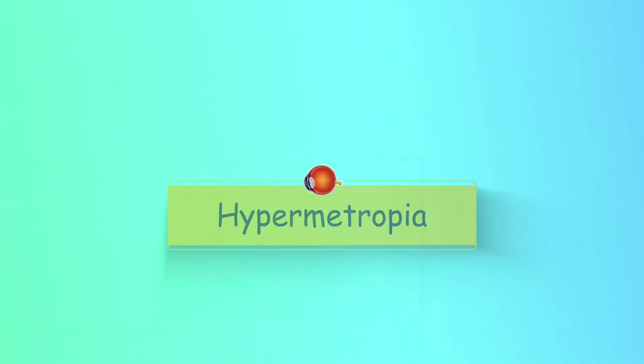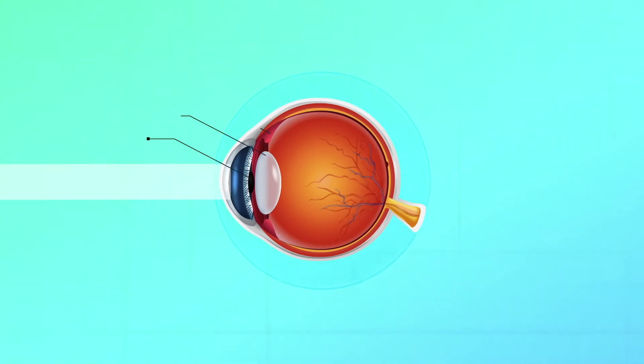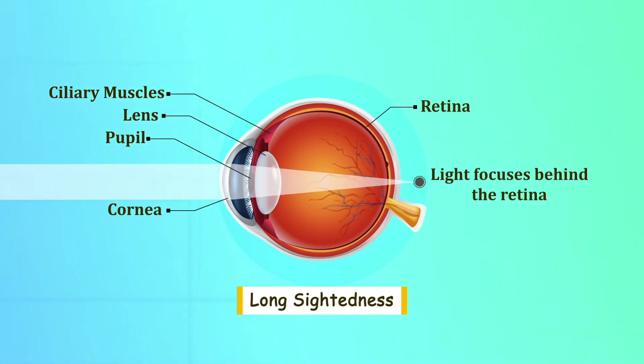The other defect of the power of accommodation is hypermetropia. Wow, this is a fancy word, right? It's nothing but long-sightedness.